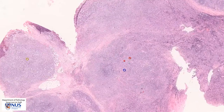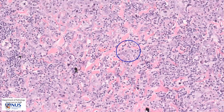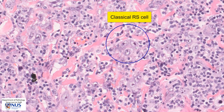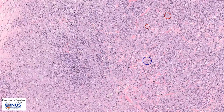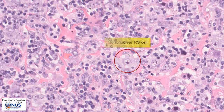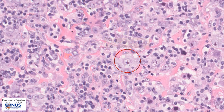Let's have a look at some of the Reed-Sternberg cells. Here is an example of a classical Reed-Sternberg cell which is binucleated. The cell itself is very large, containing large nuclei with macronucleoli. If you compare this nucleolus with the size of a small lymphocyte, you will see that it is actually as large as a small lymphocyte. Here we also see a mononuclear Reed-Sternberg cell with only one nucleus but still with that macronucleolus, and again this is a very large cell in comparison to the small lymphocytes around it.